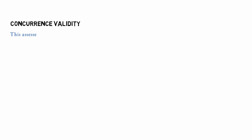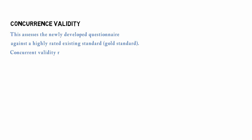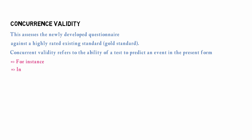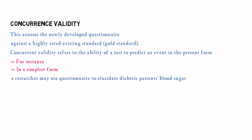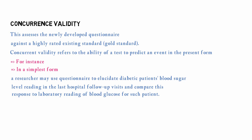The second subtype of criterion validity is concurrent validity. In this type of validity we assess a newly developed questionnaire against higher-rated existing standards. A good example is when a principal investigator is checking sugar values during a ward visit and comparing them with lab results.